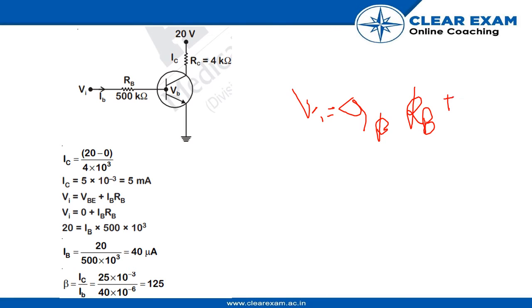By putting down the values mentioned in the question, we will be able to find out the value of IB through this formula. For IC, we can also find the value by using the formula for VCE, which is ICRC plus VCE.